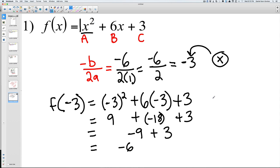So our answer, if we wanted to put it as an ordered pair, would be negative 3 comma negative 6. And our minimum, or our lowest value, would be negative 6 because that's the lowest it's going to go on the graph.